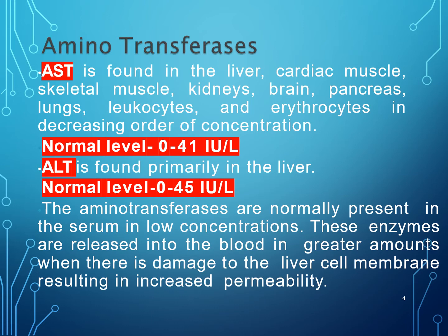Alanine aminotransferase (ALT) is found primarily in the liver. Its normal level is 0 to 45 IU per litre. These aminotransferase enzymes are normally present in the serum at very low concentrations, but if there is any liver cell injury, the levels are very high due to the increased permeability of the liver cells.